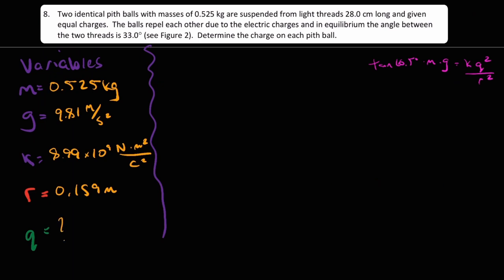We don't know q yet, but that is what this question is asking for, and we have everything we need to rearrange this equation, and then we can just fill in the variables. We'll just write now that tan 16.5 degrees times mass times g times r squared, which we brought over from the other side here, divided by Coulomb's constant k, which we have also brought over from the other side, equals q squared. We can square root both sides here. And now we can just plug in the variables.